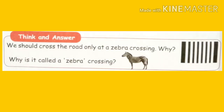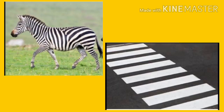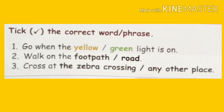Just think, children — we should cross the road only at a zebra crossing. Why? Why is it called a zebra crossing? When we cross the road, we must use the zebra crossing. At those places, vehicles will come slowly. A zebra has black and white stripes on its body — similarly, those black and white stripes on the road are why it is called a zebra crossing.